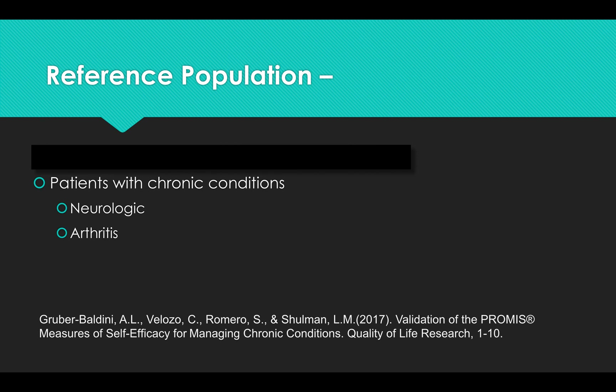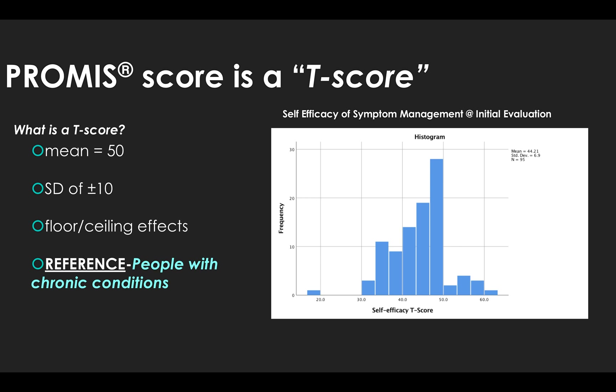The reference population for this particular scale is not the U.S. general population — instead it is people living with chronic conditions. However, it achieves person-centered status by including many different people with many different kinds of chronic conditions, including neurologic and arthritis. So let's see how this changes our typical interpretation of a T-score.